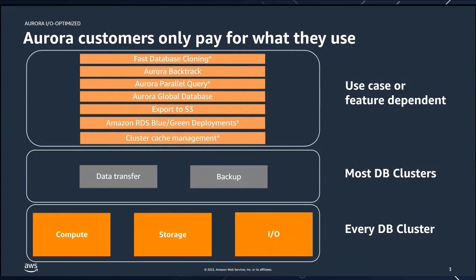Aurora offers many features that customers have come to know and love. The most common ones are Aurora Global Database for disaster recovery, fast database cloning, Aurora Backtrack, and export to S3. These are based on whether you're using or need the feature — you only enable it and only pay for what you use.